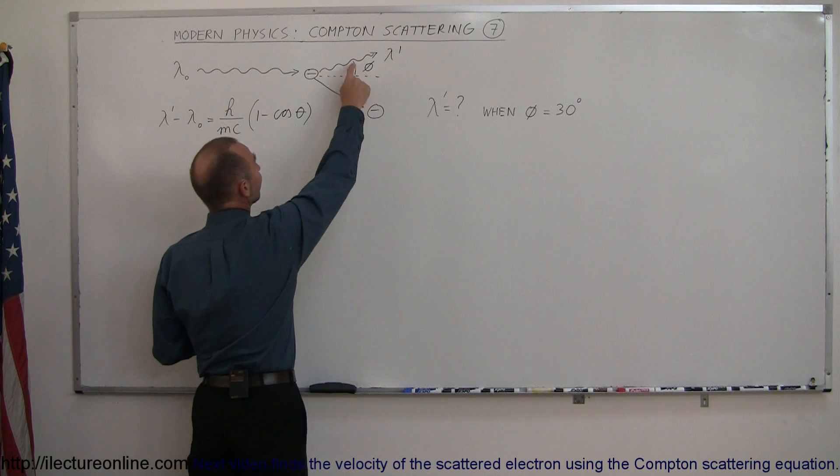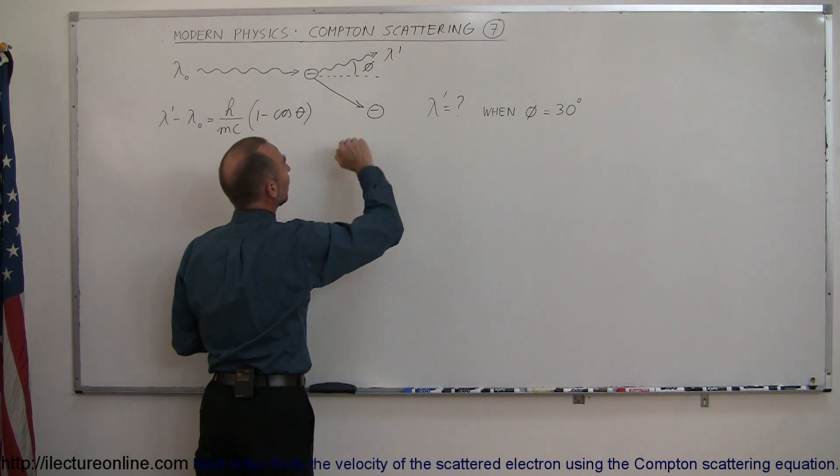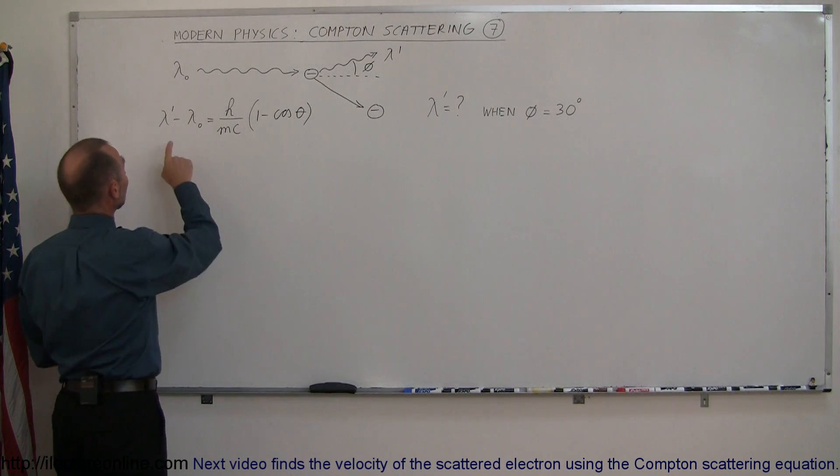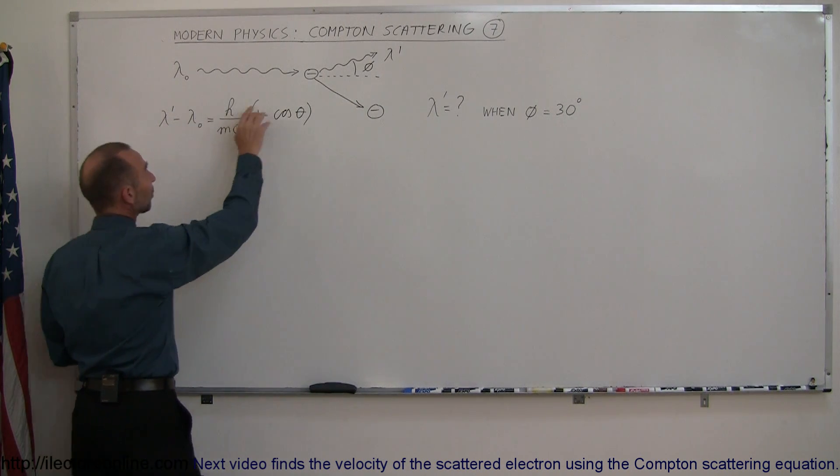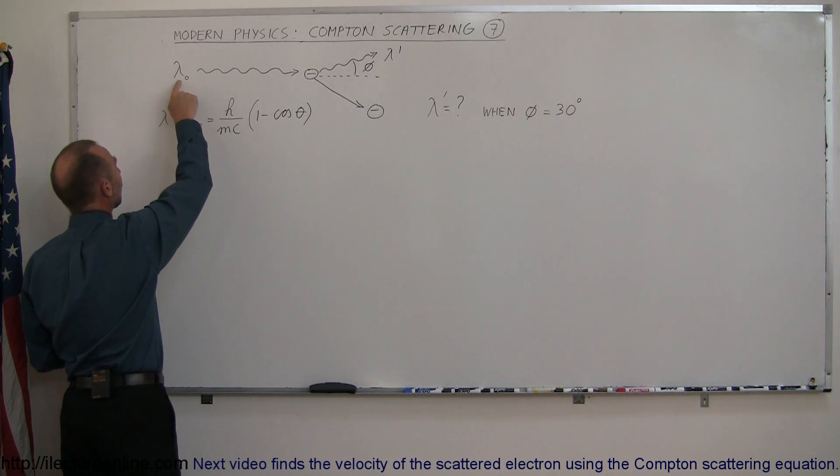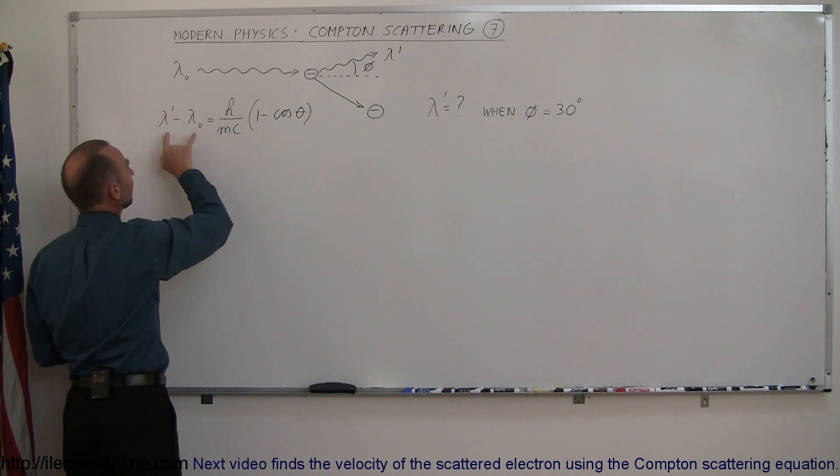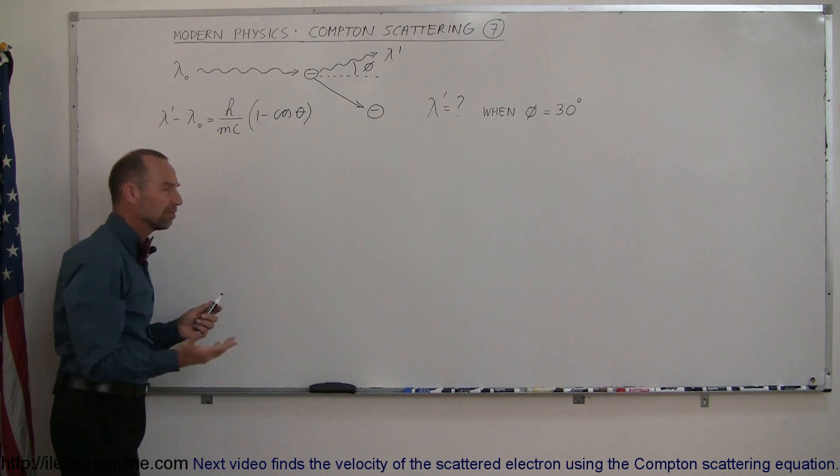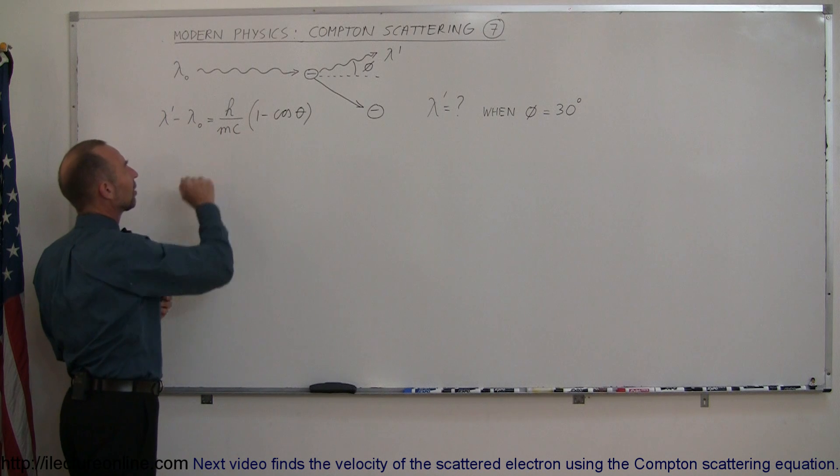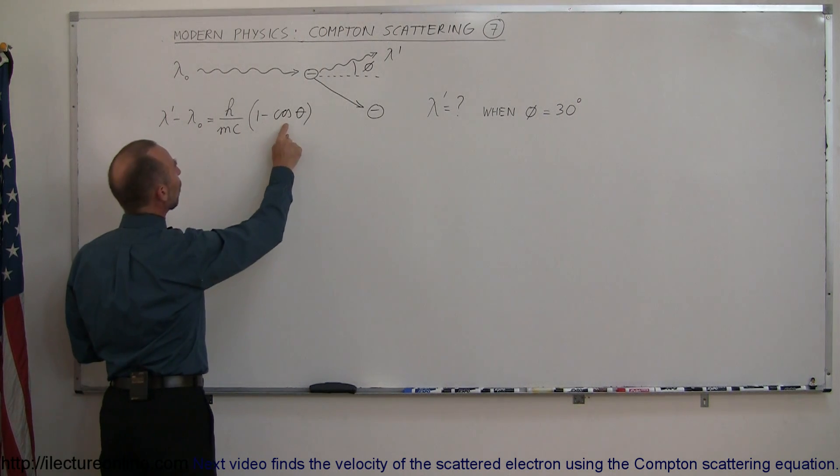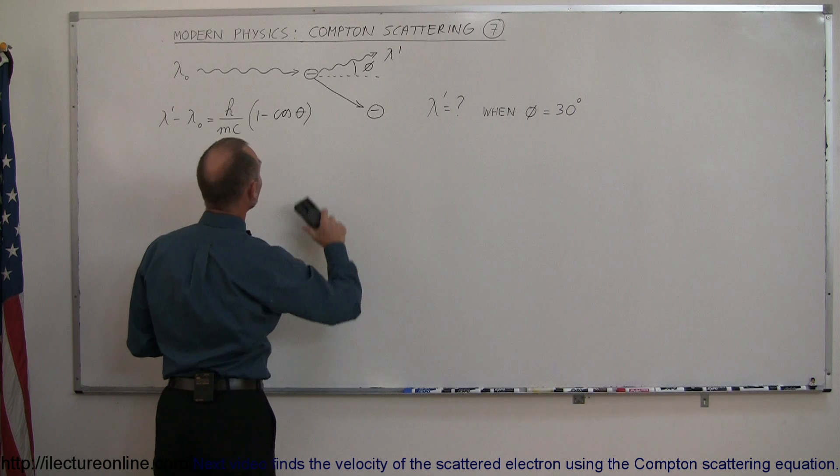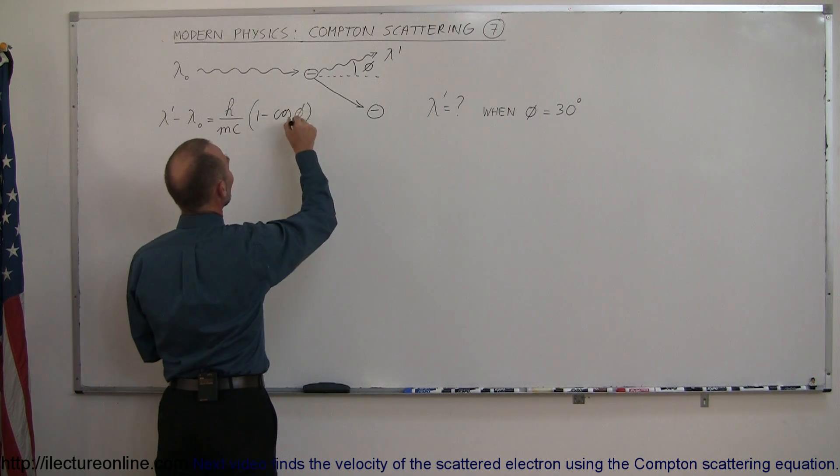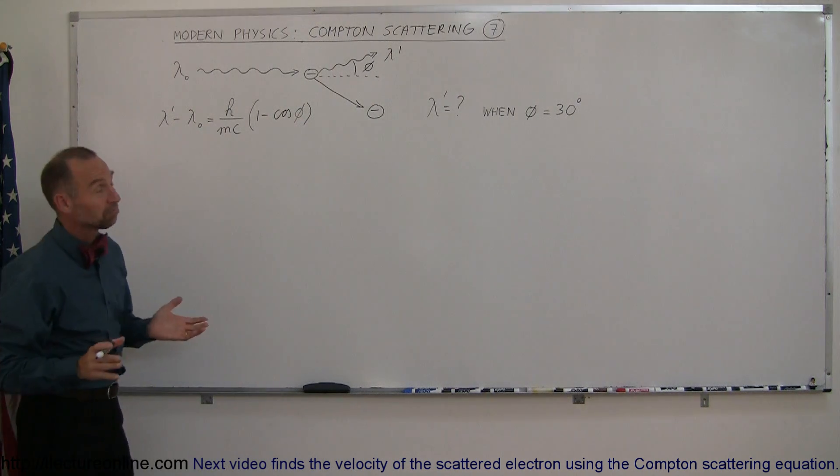Depending on the size of the scattered angle, the wavelength will change accordingly. The equation is such that the difference in wavelength of the scattered photon relative to the original photon is equal to h divided by mc, where m is the mass of the electron and c is the speed of light, times one minus the cosine of the angle. If I keep the angles the same, it makes more sense, so I'll use phi in both places.